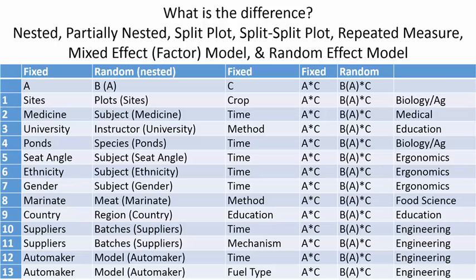A mixed effect model is basically when you have random, fixed, and nested factors — maybe all of them together. A random effect model typically refers to having a single random factor, which may also have a nested or fixed factor associated with it.